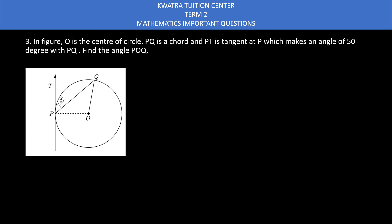Let's start with the third question. It says in figure, O is the center of a circle, PQ is a chord, PT is tangent at P which makes an angle of 50 degree with PQ. Find the angle POQ.